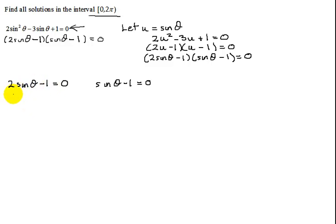Solve each of these linear equations. Add 1 to both sides in the first one, divide both sides by 2, and I get sinθ = 1/2. And the second one: sinθ - 1 = 0. Add 1 to both sides. The sine of theta equals 1.